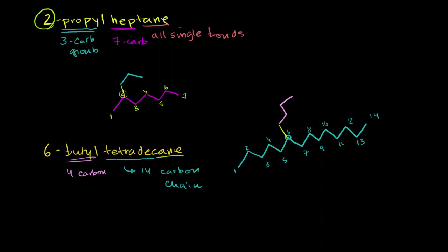Would you ever see a 9-butyltetradecane written? You might think you could draw it, but the reason you won't see it is because there's a better way to number it. Instead of starting from one end and calling the branch position 9, you should start numbering from the other end. That way the branch is at position 6, not 9. So it's actually also 6-butyltetradecane — you always want to start numbering from the direction that gives the lowest number for the first substituent group.